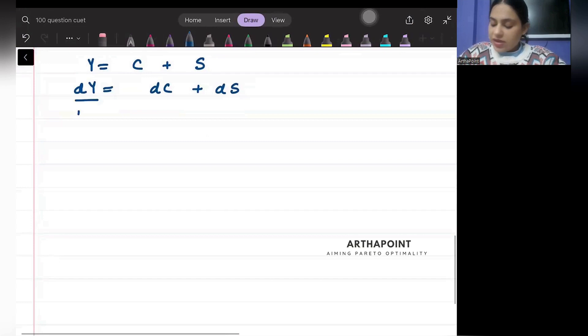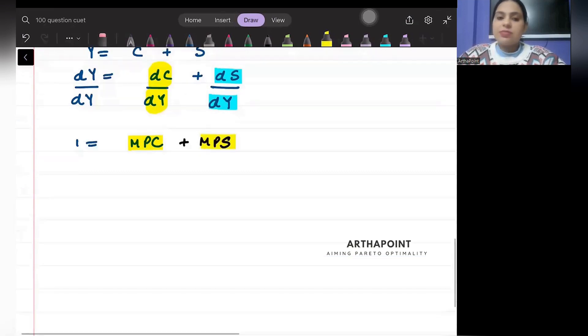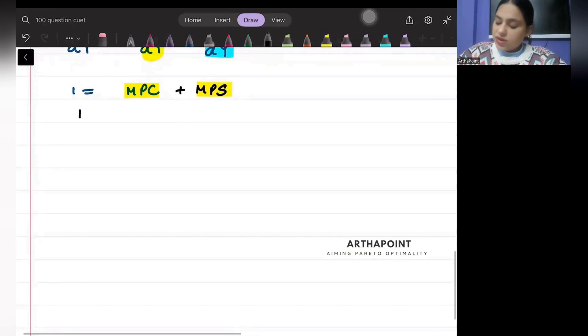I can divide both sides by dY. So 1 = MPC + MPS, where MPC is how consumption changes as income changes. So I can say MPC + MPS = 1. So 1 - MPC will be MPS.